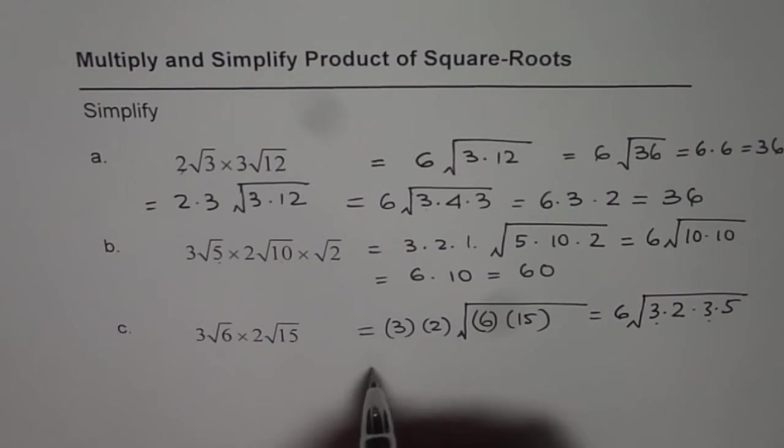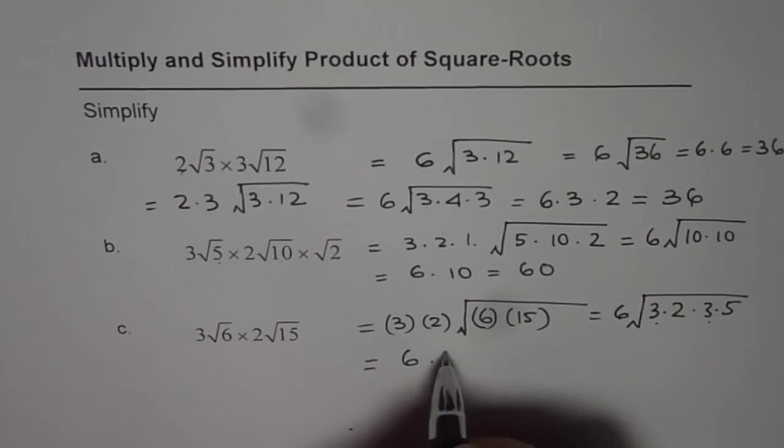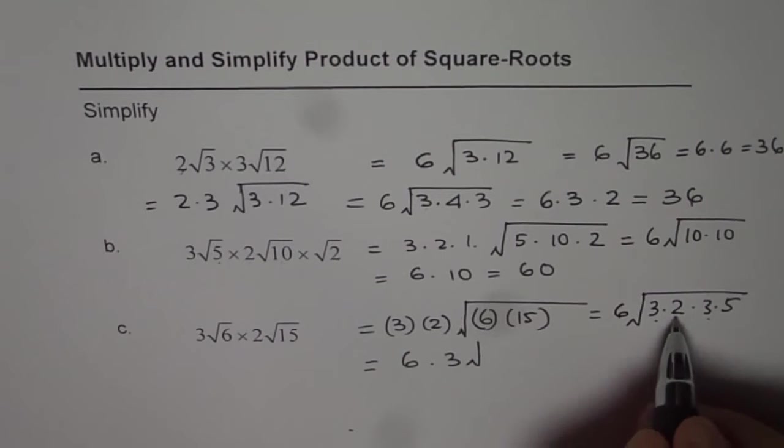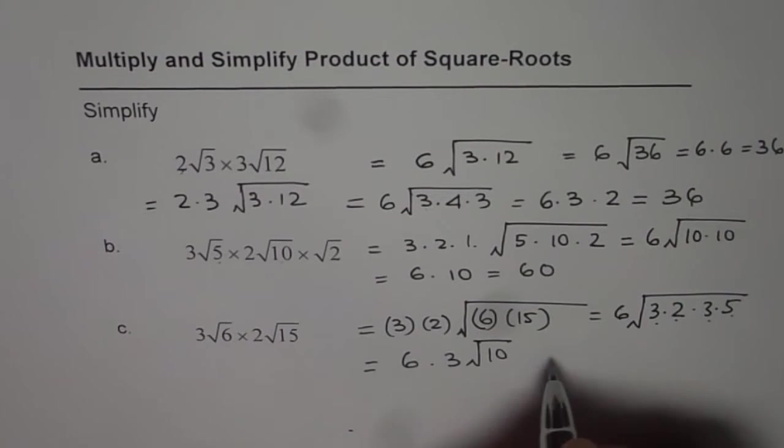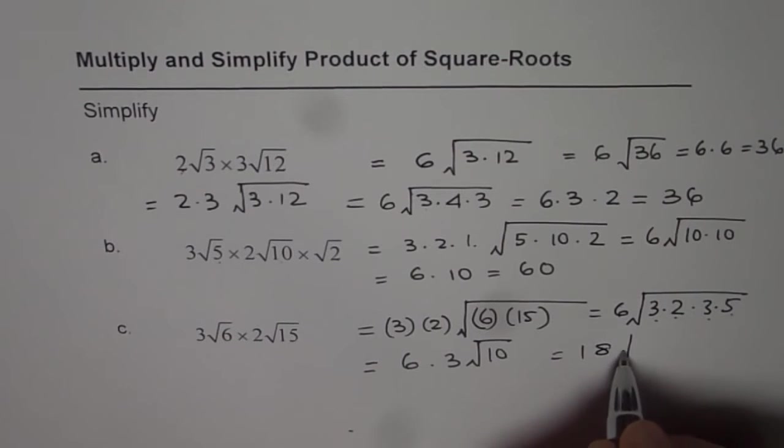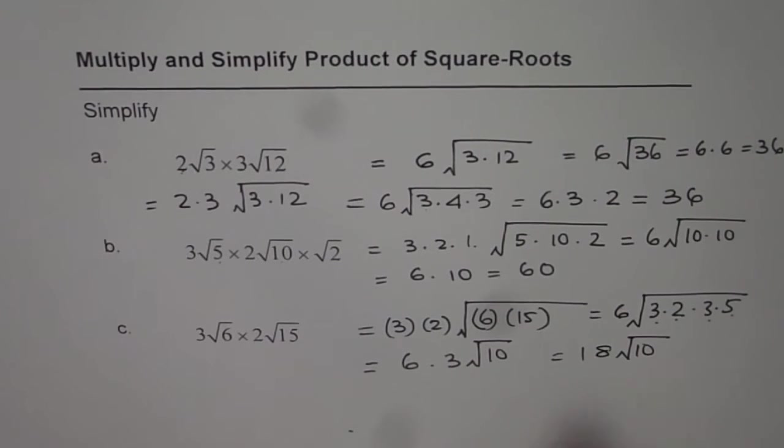Now there are two 3s. One of them can be taken out. 6 times 3 and within square root I get 5 and 2 which gives me 10 as your product. So I have got 18 times square root of 10. So that is my answer. The exact answer for part C, correct?